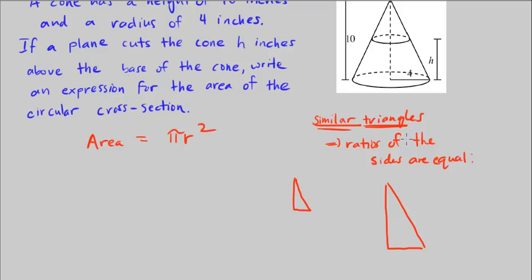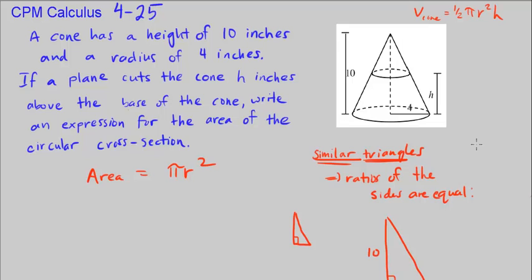That means the ratio, so we know this one has a base here of 4 and a height of 10. The right triangle. This one, well, what is the height of this triangle?